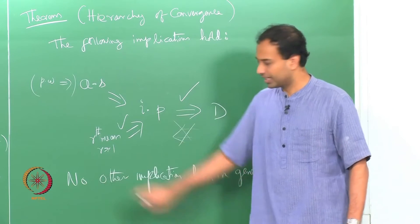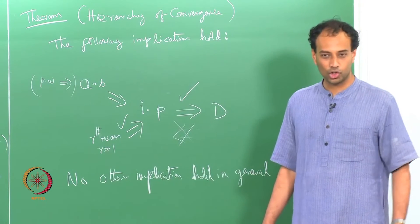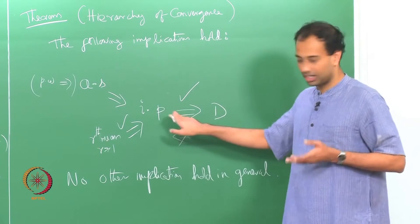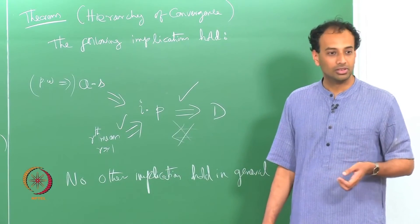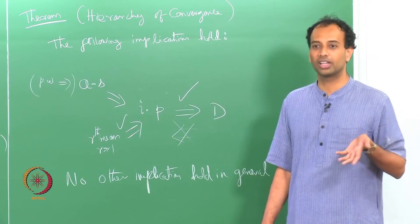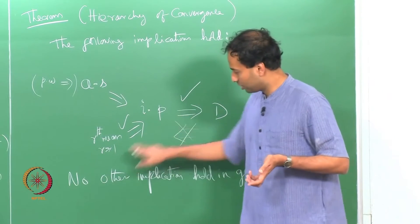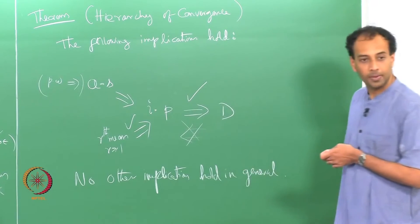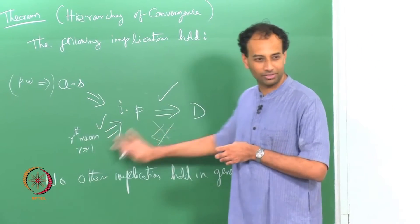Convergence in probability does not imply convergence in rth mean or second mean. You can show this by taking a sequence of random variables that converges in probability but whose second moment may be infinite. You can construct a trivial example to knock off that implication.